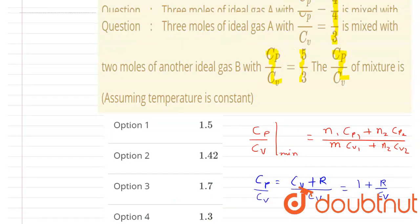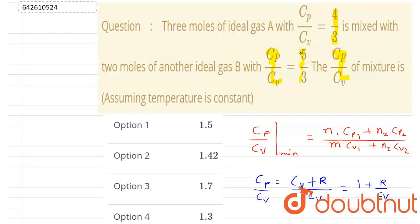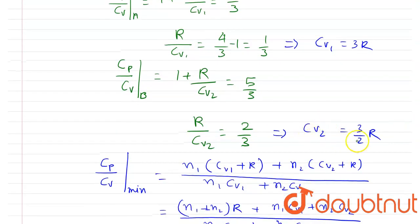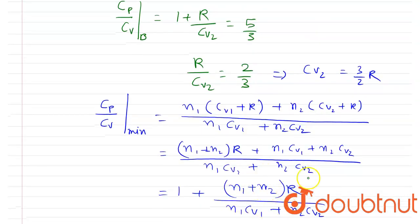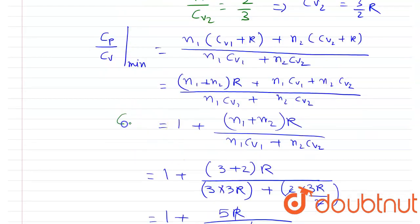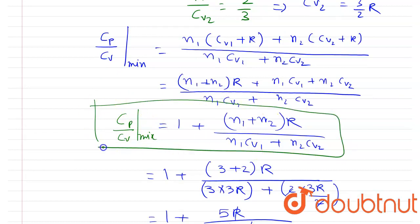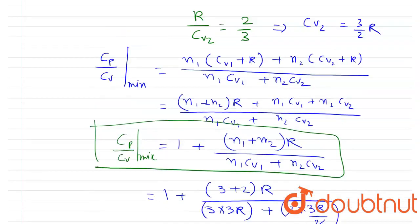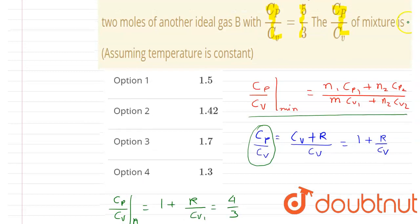The cp/cv ratio for the mixture is 17/12, which equals approximately 1.42. We used the mixture formula along with the relation cp/cv = 1 + R/cv to find cv for each gas, then substituted into the expression to get the final answer.